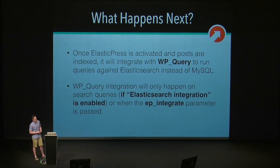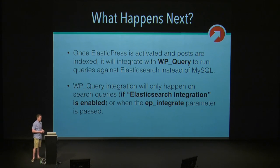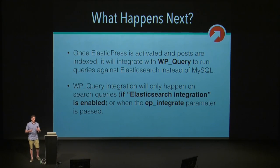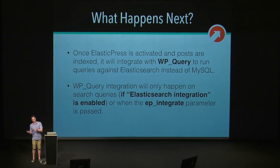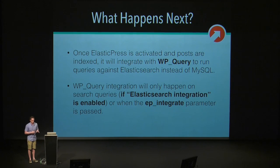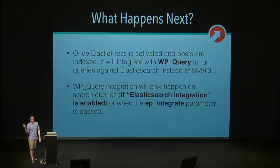Once our content is synced and our Elasticsearch host is set up properly, we have access to all the really cool ElasticPress functionality and its inner API. At that point, we can tell ElasticPress to run all of our search queries through Elasticsearch instead of MySQL, and to do that you just check a simple box. ElasticPress hooks into the WP query object and runs your queries against Elasticsearch instead of MySQL, hooking into WP query to parse the arguments, formatting them into the Elasticsearch query DSL, sending that to Elasticsearch, and putting the results back behind the scenes.